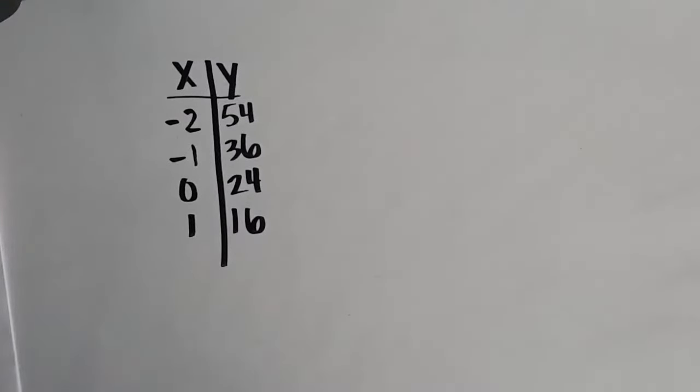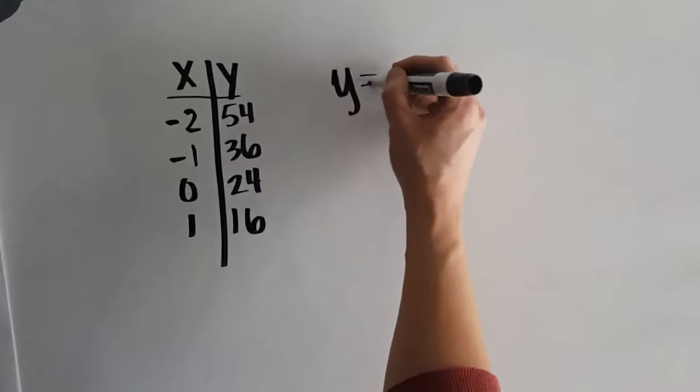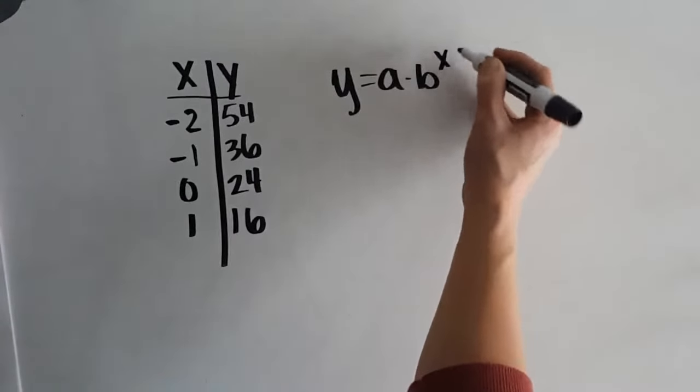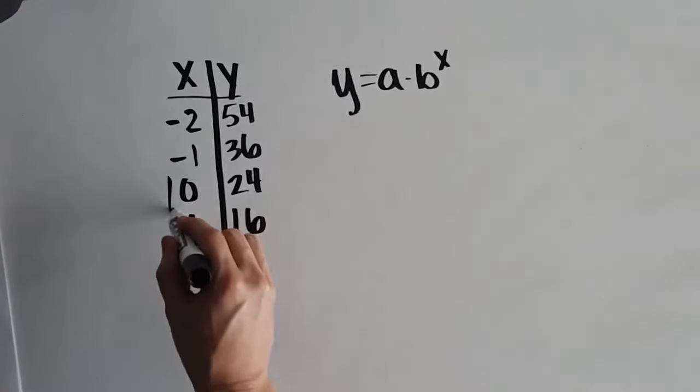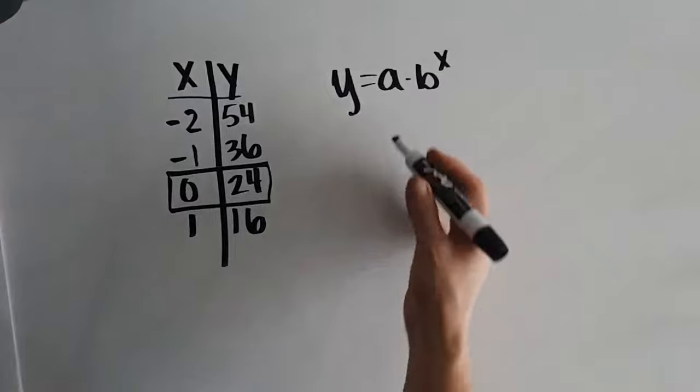So let's take a look at one more example in a table that doesn't necessarily give us a situation. So in this example, we need the a and the b, as always, in order to write it in this form. a is our initial amount. So if I'm looking at my table, I know that always happens when x is 0. So that would be our a value.